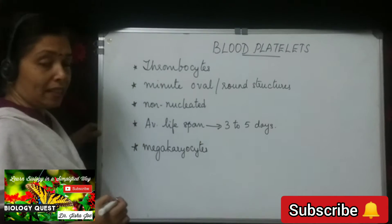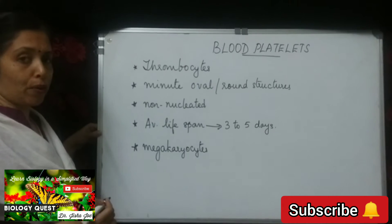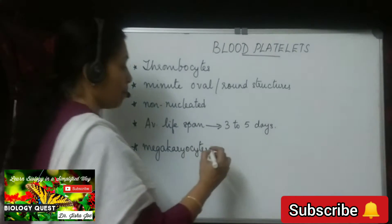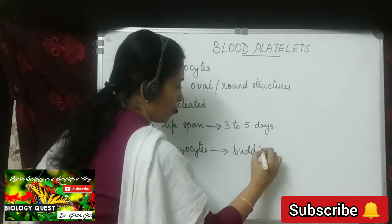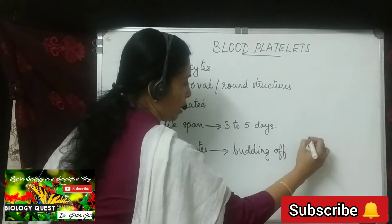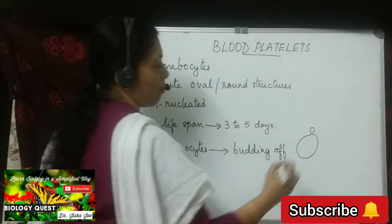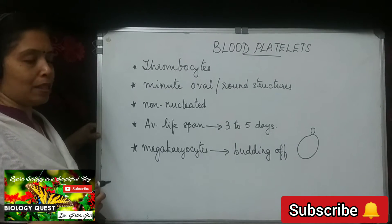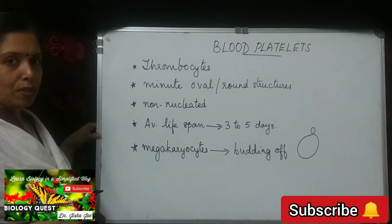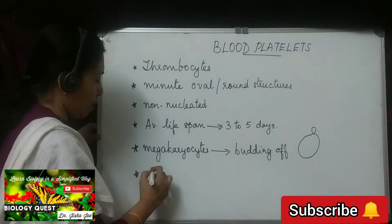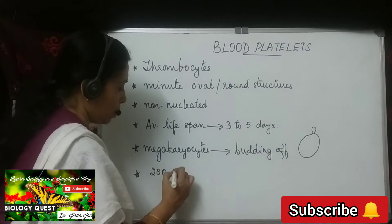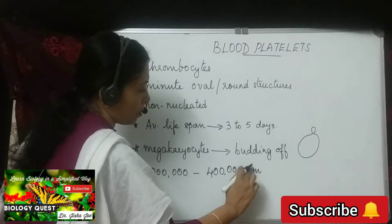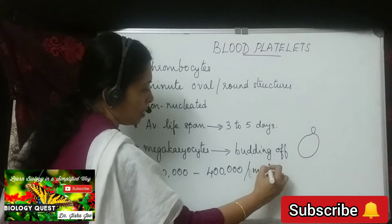Megakaryocytes are giant cells present in the red bone marrow, and it is from these megakaryocytes that platelets are produced by the process of budding. From the large megakaryocytes, small buds will be produced, and blood platelets are formed by budding off from these giant cells. Their number ranges from 200,000 to 400,000 per cubic millimetre of blood.